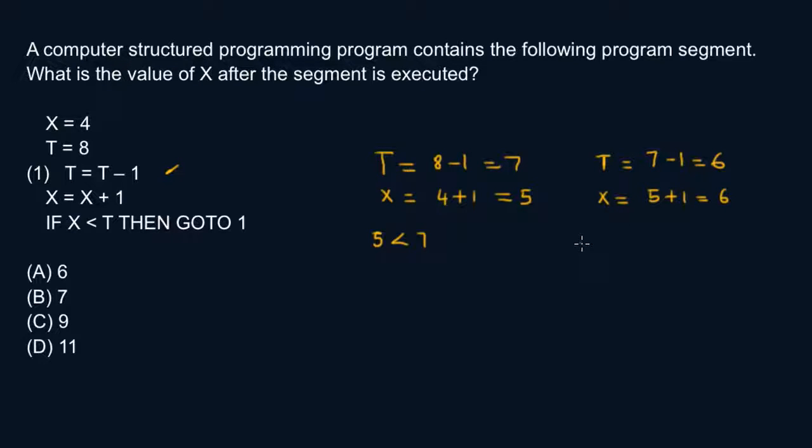Now this condition is no longer satisfied. So x is not less than t. x is equal to t. So this condition right here is not satisfied. So we cannot go back to 1. So the final value of x is then equal to 6.